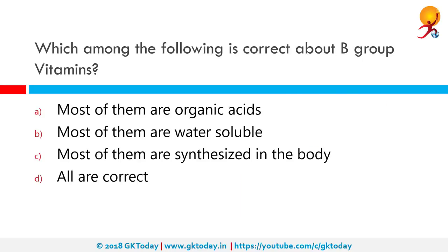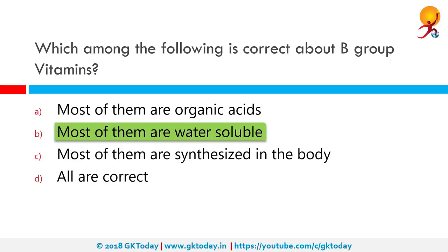Which among the following is correct about B group vitamins? B vitamins are a class of water-soluble vitamins that play important roles in cell metabolism. Though these vitamins share similar names, they are chemically distinct compounds that often coexist in the same foods. Dietary supplements containing all eight are referred to as vitamin B complex. The correct answer is most of them are water-soluble.